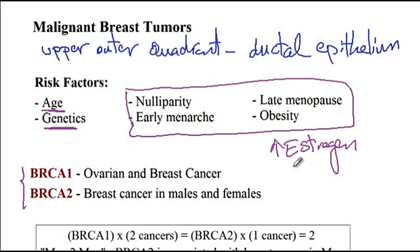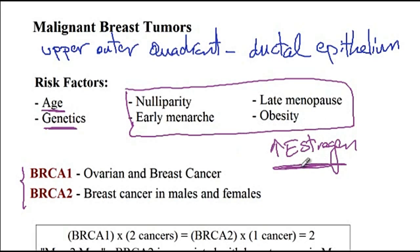Early menarche causes early exposure to high estrogen levels, increasing breast cancer risk. Late menopause prolongs high estrogen exposure. Obesity allows adipose tissue to convert androgens into estrogen, again increasing exposure to estrogen and thus breast cancer risk.